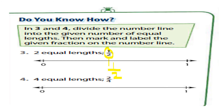Likewise, for question four, we divide into four equal parts: one, two, and three — the fourth is already given. The fraction for the first part is 1/4, for the second part 2/4, and for the third part the numerator is three and the denominator is four, giving 3/4.